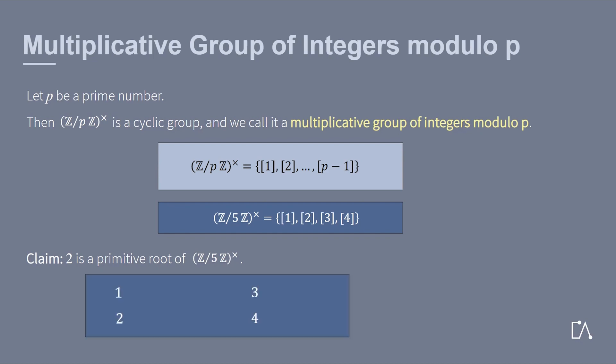This means we have to check whether we can write the representatives of the residue classes, namely 1, 2, 3, 4, as different powers of 2 modulo 5. By trial and error, this can be easily done.